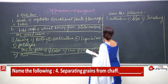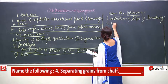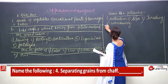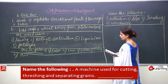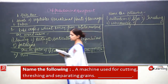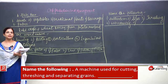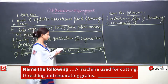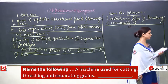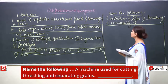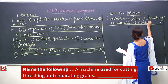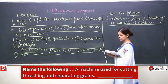Four: separating grains from the chaff — that is winnowing. Five: a machine used for cutting, threshing and separating grains — that is known as a combine.